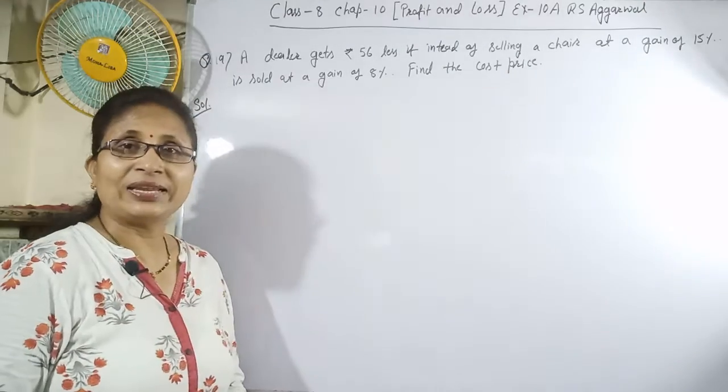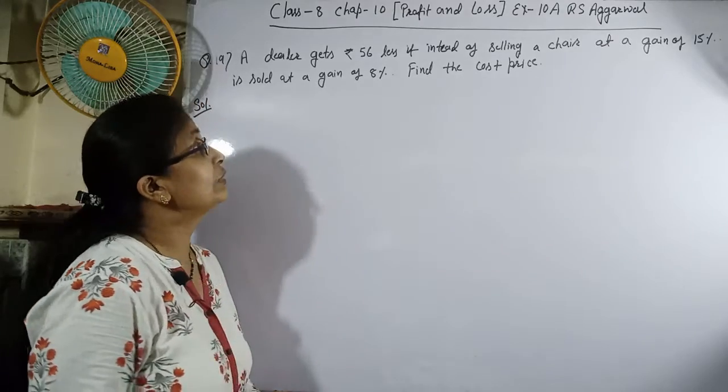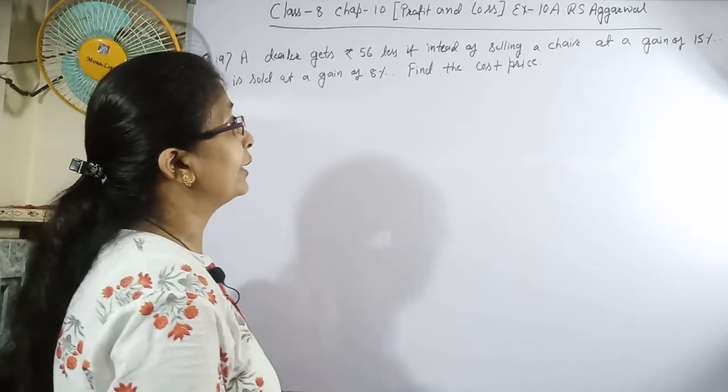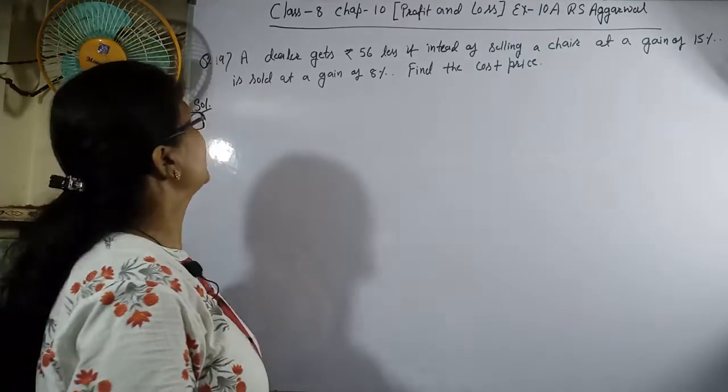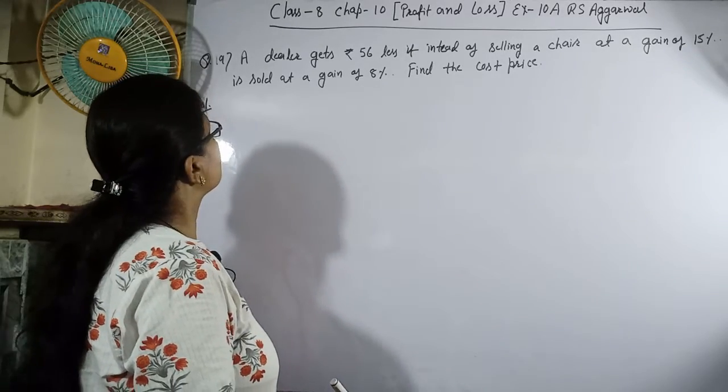The question which is given: A dealer gets Rs. 56 less if instead of selling a chair at a gain of 15%, it is sold at a gain of 8%. Find the cost price.